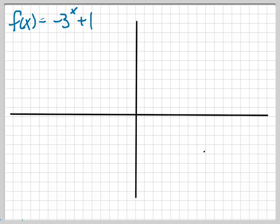Let's graph f of x equals negative 3 to the x plus 1. So what we're going to have to do is first think about the basic graph, which is just going to be 3 to the x.